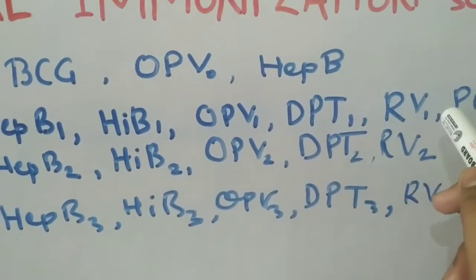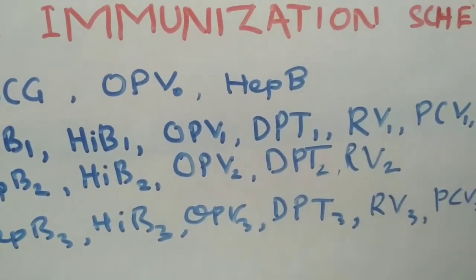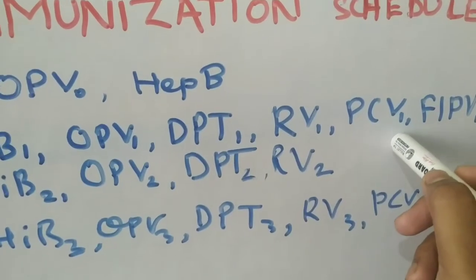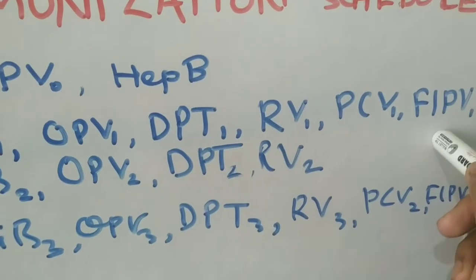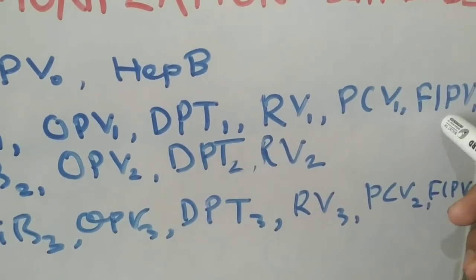READS stands for Rotavirus 1. Public stands for PCV1, that is pneumococcal conjugate vaccine 1, and fractional IPV Fund stands for fractional IPV1.